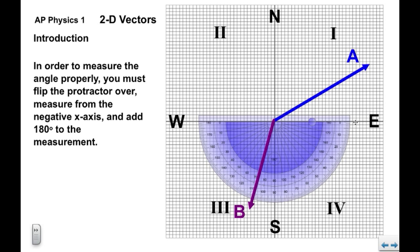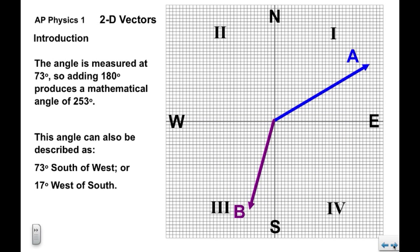So if we're going to measure this angle in the mathematical system from zero, we've got 180 degrees here, and then plus whatever this measurement is. So we can see here that the angle is 73 degrees. We add 180, and we get a mathematical angle for vector B of 253 degrees.